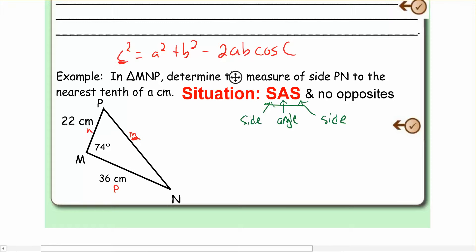So if I'm looking for side lowercase m, let's just call that our c. So I'm going to rewrite this as m squared is equal to, now it doesn't really matter if I go n squared or p squared first, just one of the two. So I'll go p squared plus n squared minus 2. And now again, just p and n. And then the cosine is always going to be the cosine of the letter that I'm looking for, but the uppercase one. So cosine m. And that's it. Now we're going to fill it in.